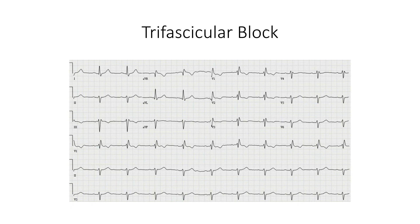Finally, you can see elements of conduction delay in all three limbs of the ventricular conduction system in trifascicular block. In the yellow and purple boxes, we can see left anterior fascicular block. In the green box, we see evidence of left posterior fascicular block. And in the blue box, we have an RSR prime wave that is reminiscent of right bundle branch block. So there's evidence of trifascicular block here.